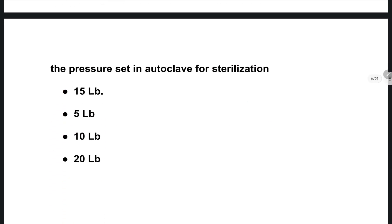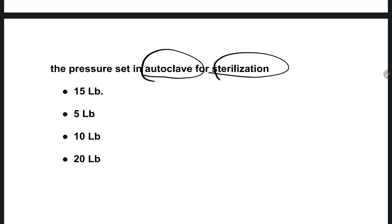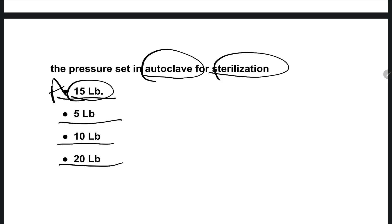The next question: the pressure set in an autoclave for sterilization. How much pressure is needed to sterilize equipment in the autoclave? Options are: 15 LB, 5 LB, 10 LB, 20 LB. The right one is option A — 15 LB pressure is required to sterilize equipment in the autoclave.